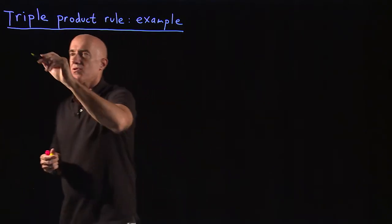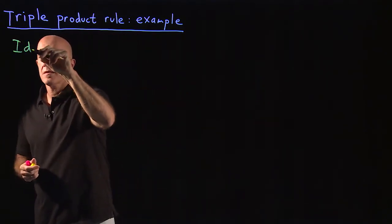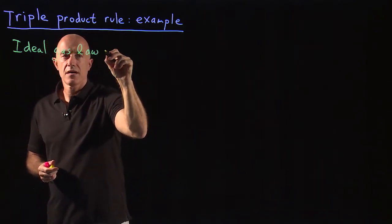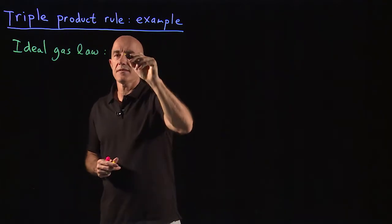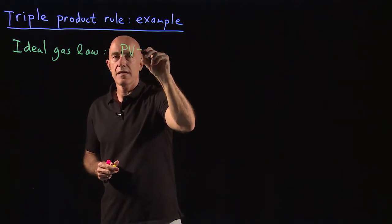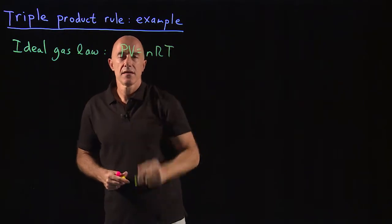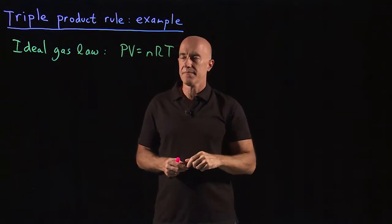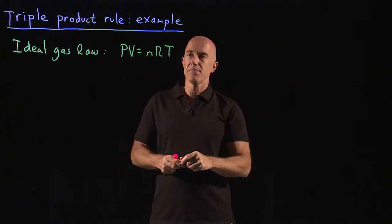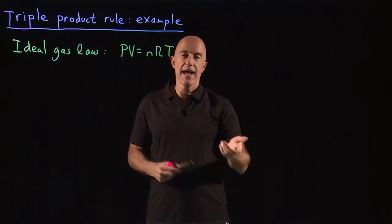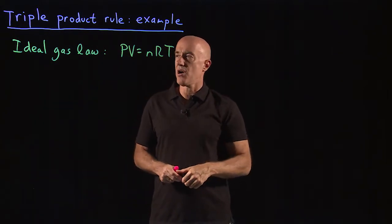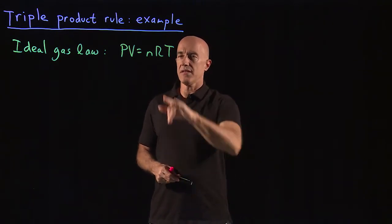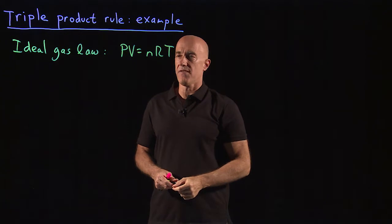That's the ideal gas law. Many of you might have seen this in a chemistry course. This is PV equals nRT. So P is the pressure of the gas, V is its volume, T is its temperature — those are the variables. n is the number of moles and R is the ideal gas law constant. So n and R are constants, and P, V, and T are variables.